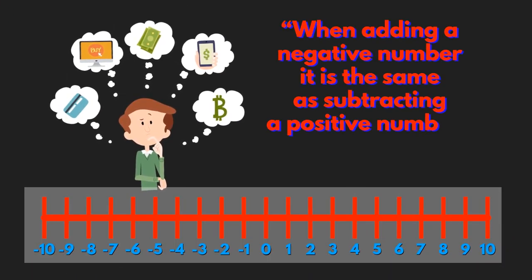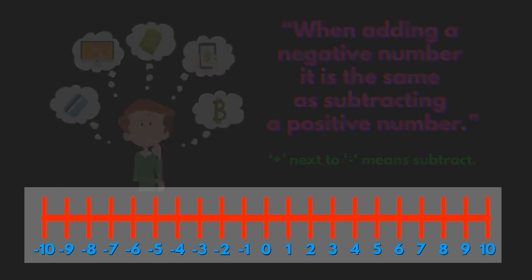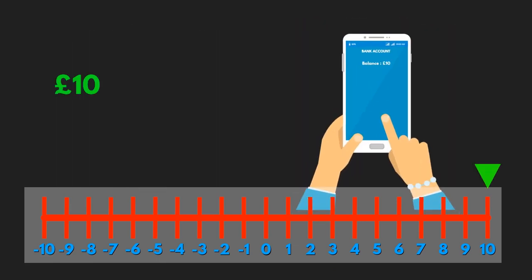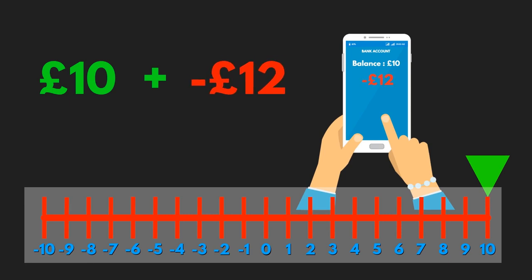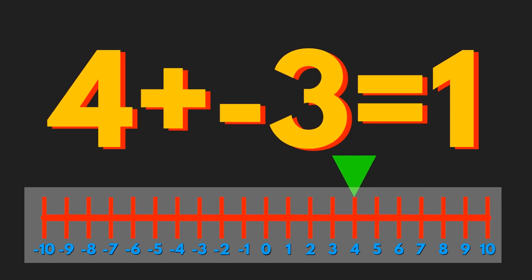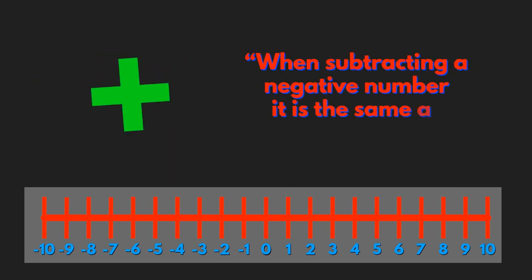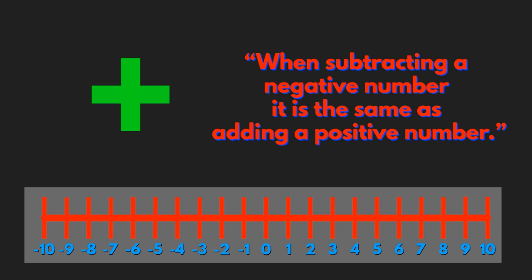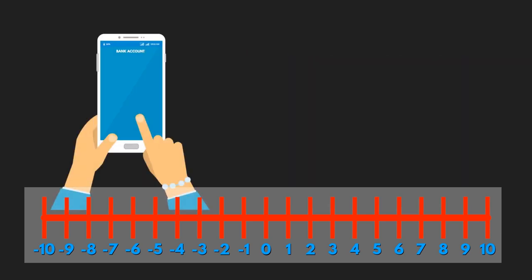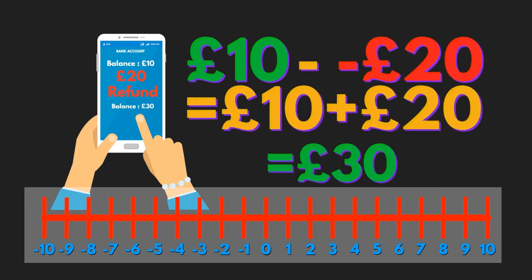For example, if you have £10 in your bank account and you buy something for £12, your bank balance would be minus £2. When subtracting a negative number, it's the same as adding a positive number. Think about your bank account again — if you have £10 in your account and your bank refunds a negative transaction, they're adding that back on. Minus next to minus means add.